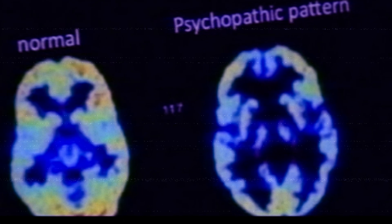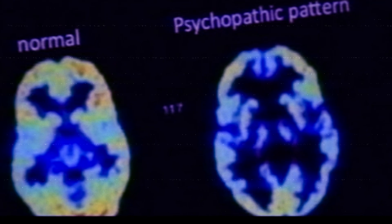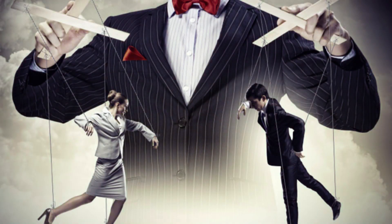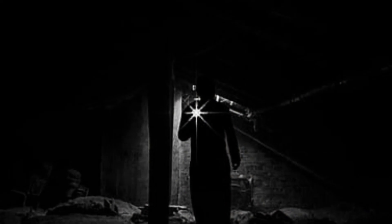The fifth and final difference is treatment options. While there is no cure for either disorder, psychopaths are often considered untreatable, while sociopaths may benefit from treatment options such as therapy or medication. However, the effectiveness of treatment options for both disorders is still a matter of debate. In conclusion, although psychopathy and sociopathy may seem similar, they are in fact very different. Psychopaths are often more calculated and manipulative, while sociopaths are more impulsive and have a problem with anger. Understanding the differences between the two can help individuals recognize and seek appropriate treatment.